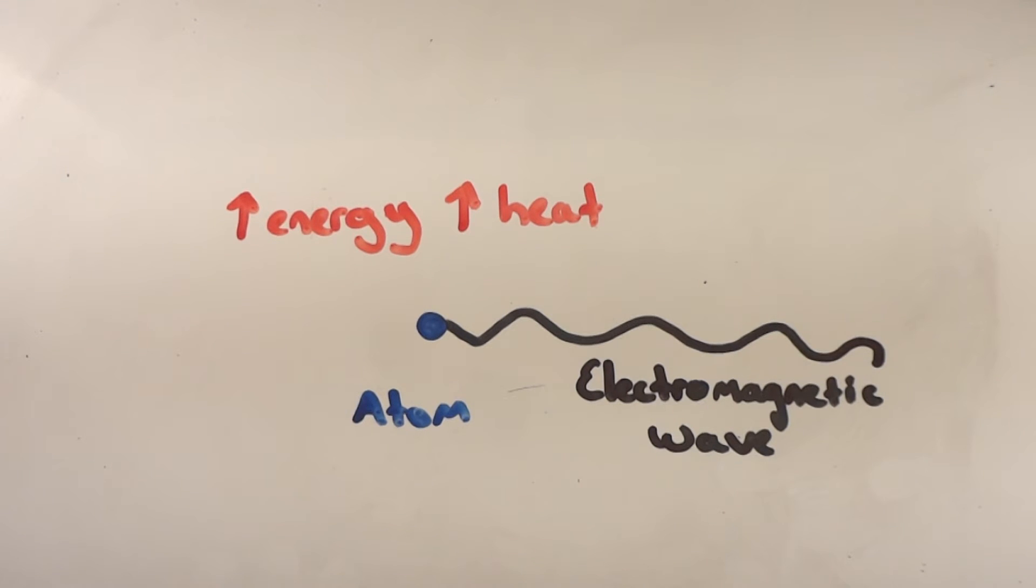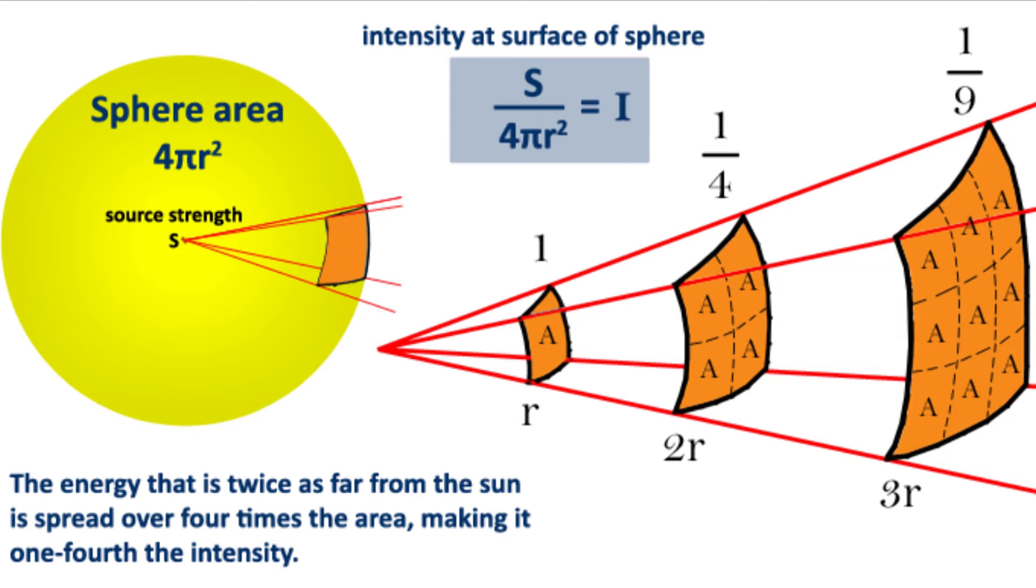Because of this, something which is closer to the sun will be experiencing more electromagnetic waves, which is fully represented in this image.